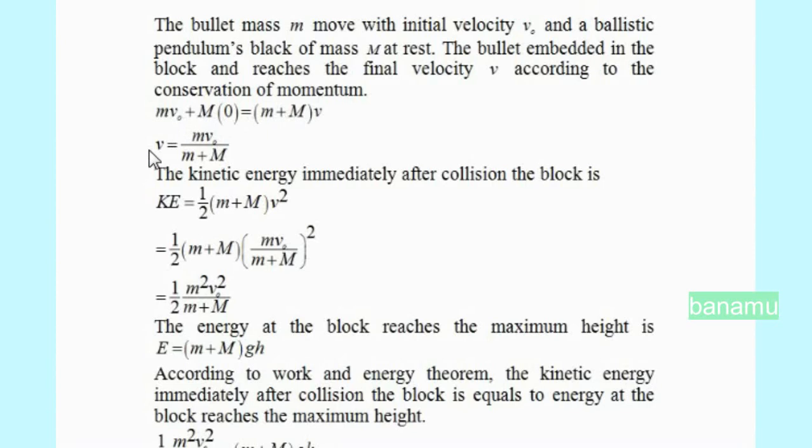The final velocity V equals mV0 by m plus M. The kinetic energy immediately after collision is KE equals half into m plus M into mV0 by m plus M whole square, which simplifies to KE equals m squared V0 squared by 2 times m plus M.